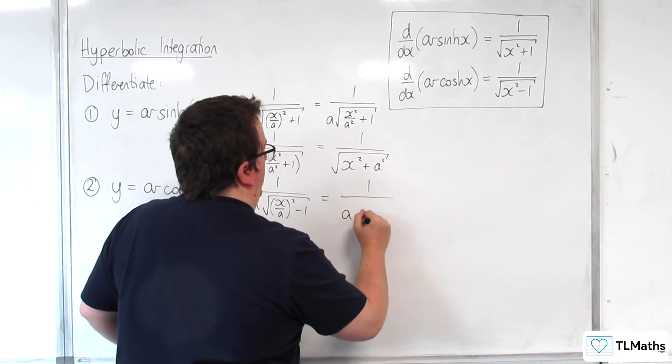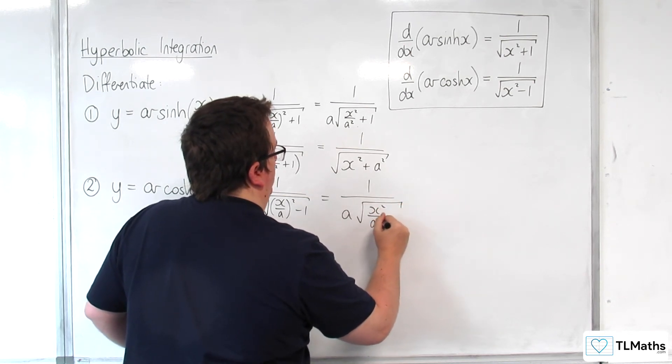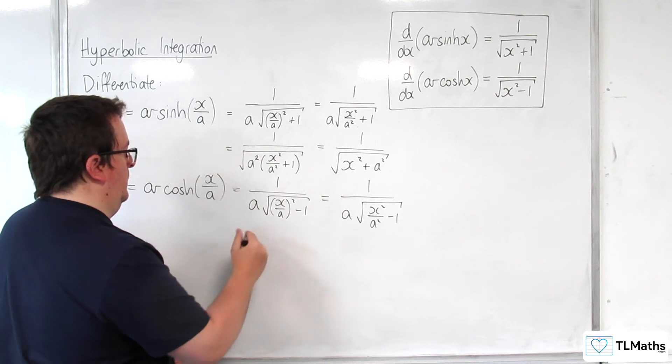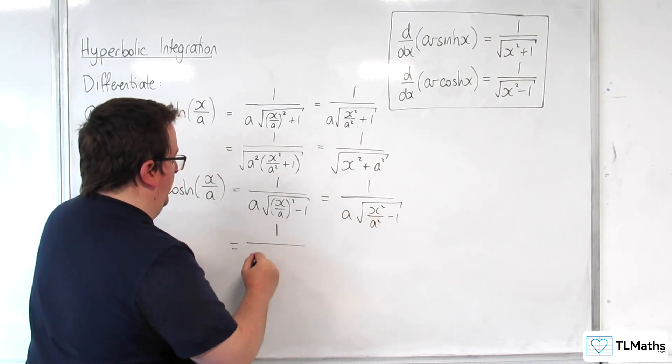So we've got 1 over a times the square root of x squared over a squared, take away 1. Which is equal to 1 over, bring the a into the square root.